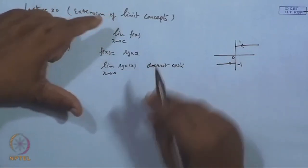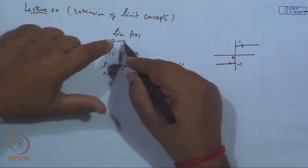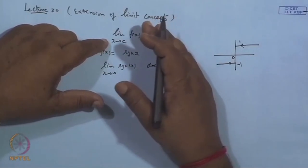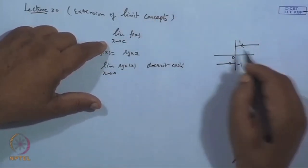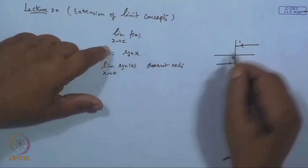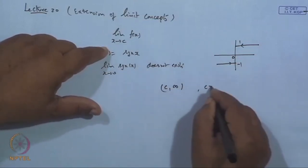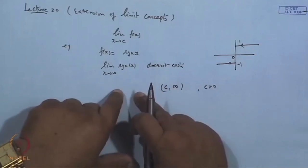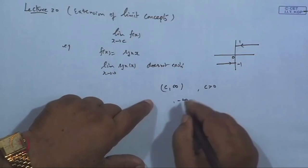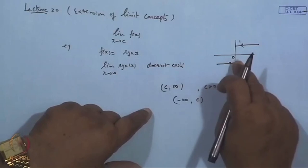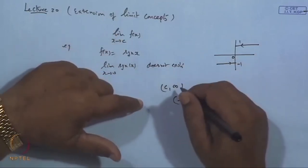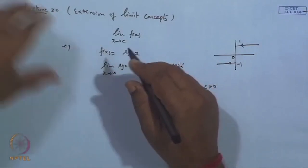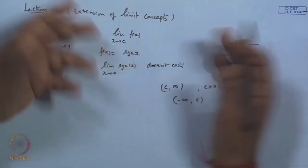However, if we consider only the set A over which the limit is taken — either on the right-hand side of 0 (the interval (c, ∞)) or the left-hand side — then the limit may exist. So though the overall limit does not exist, we can say partially that the limit exists when approaching from either the left or right side individually, and these may be different.